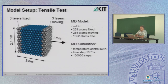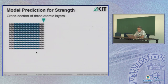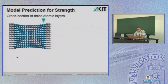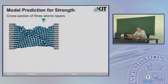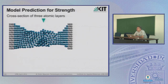Let's do molecular dynamics and see how it works to explain tensile properties. If we take 2,000 atoms, fix three layers on one end, and move three layers on the other end, that's nothing else than a tensile test. That's a tensile test on the atomic level based on our simple model.